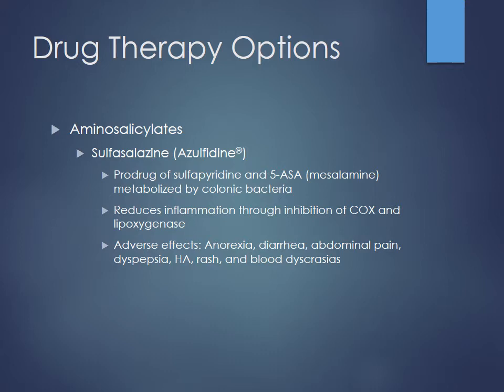The first group of drugs are the anti-inflammatory aminosalicylates. Patients contraindicated include post-viral kids under 16 due to Reye's syndrome. Sulfasalazine is the first one — it's a prodrug, meaning the parent form is inactive and must be activated. It gets broken down into sulfapyridine and 5-aminosalicylate, also known as mesalamine. This metabolic conversion is actually catalyzed by colonic bacteria, allowing the drug to become active in the colon.